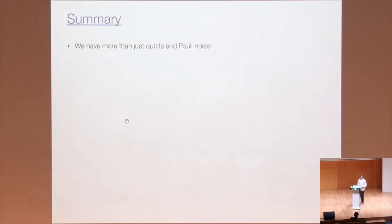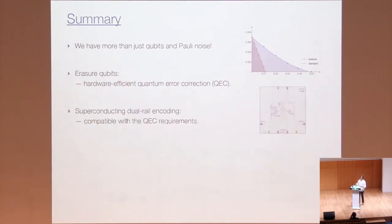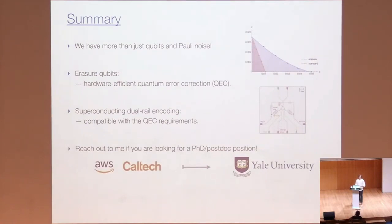This brings me to the summary of my talk. I hope that I convinced you that it really pays off to dig a little bit deeper and to capitalize on the fact that we have more than just qubits and Pauli noise in the system. In the talk, I described to you this simple idea, erasure qubits, that really can buy us a lot and can lead to hardware-efficient quantum error correction. Also, I said a few words about our recent experiment that realizes erasure qubits with superconducting dual-rail encoding. And lastly, I would like to say that if you are interested in quantum error correction and fault tolerance, please reach out to me because I will be starting a group next year and I will have a few positions available. With that, thank you for your attention.